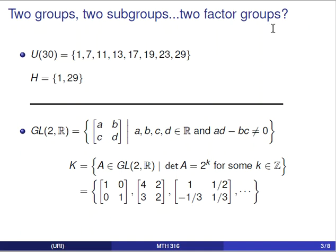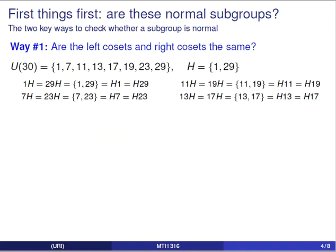If we're going to talk about factor groups, we need to first test whether these subgroups are actually normal subgroups. There are two ways to check whether a subgroup is a normal subgroup. One way is to test whether the left cosets and the right cosets are the same. So let's take our first example, U of 30 with H being {1, 29}, and look at all the different cosets, forming both the left cosets and the right cosets.